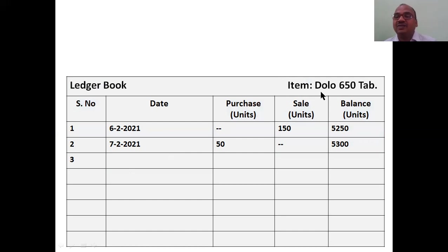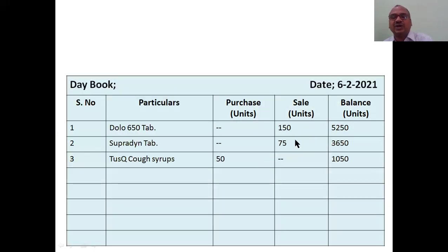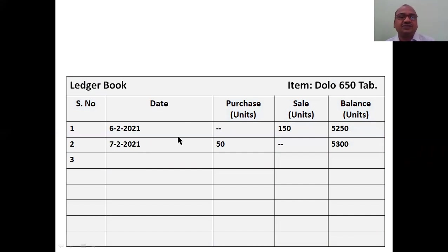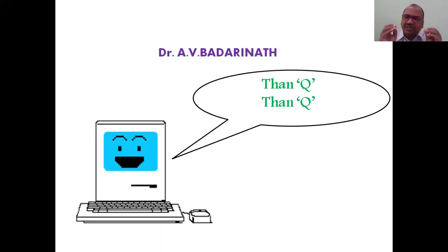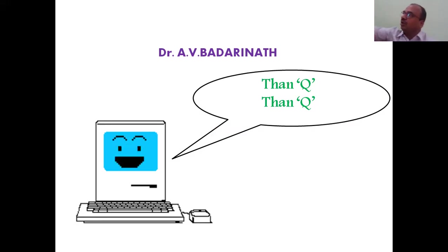In the ledger book, the item name appears as a heading — for example, 'Dolo 650 Tablets' — and under it you see sales and purchases date-wise, with the running balance. In modern software, this ledger book format is already built in. Once you enter the day book details in the computer, it automatically posts to the ledger book. When you open the ledger book, everything — purchases, sales, balance — is already there. The computer saves both time and manual effort.